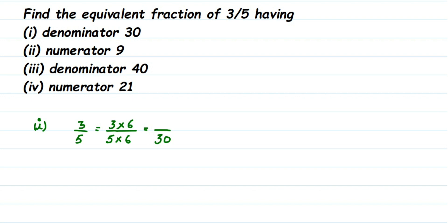We multiply in the numerator because we cannot change the denominator alone — if you make any changes, you must do the same in the numerator. If you're dividing by a certain number, divide the same in the numerator, otherwise the value of the fraction will change. So 3 × 6 = 18, and we get 18/30 as the answer for the first one.